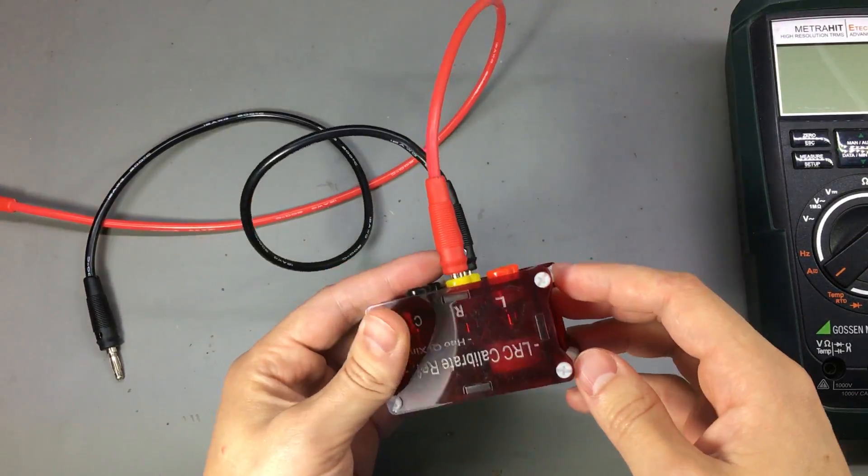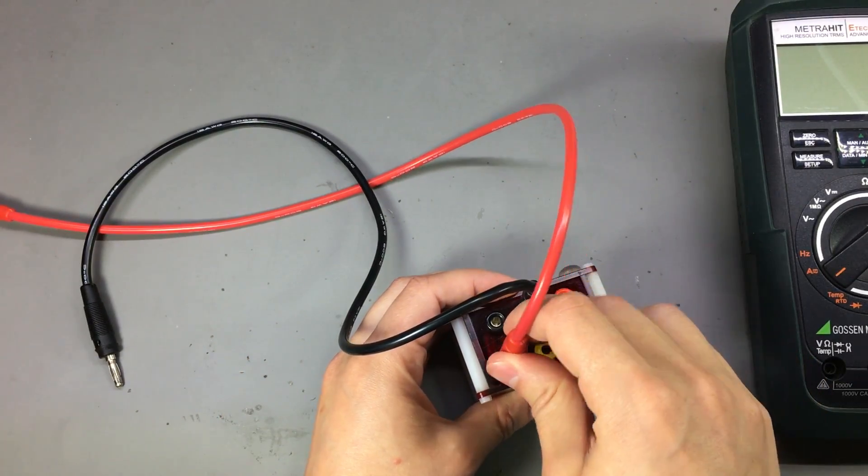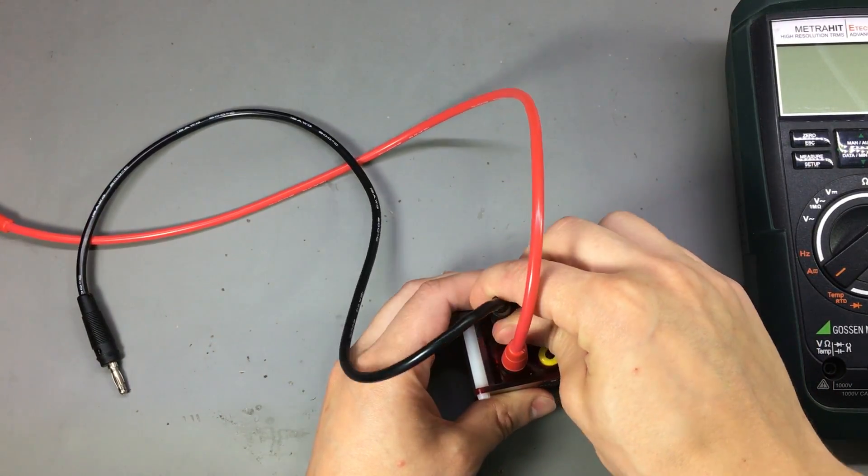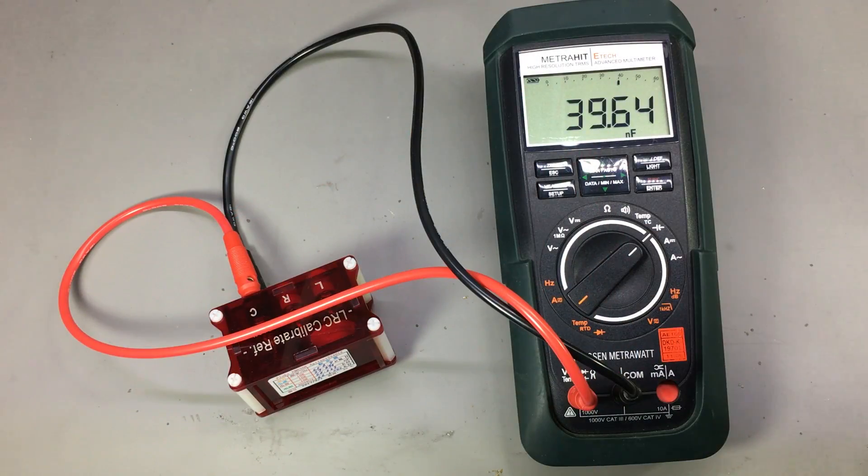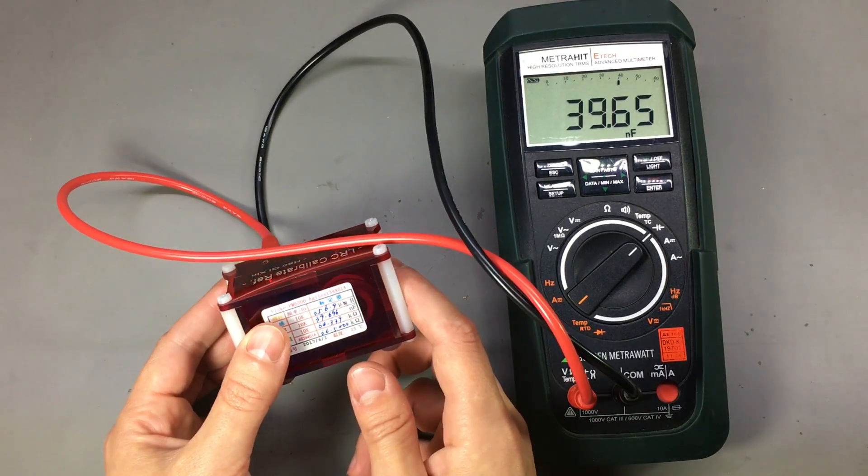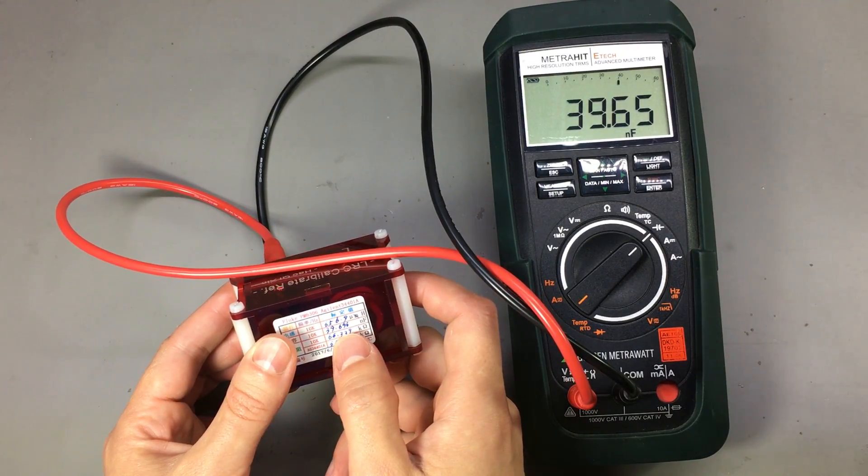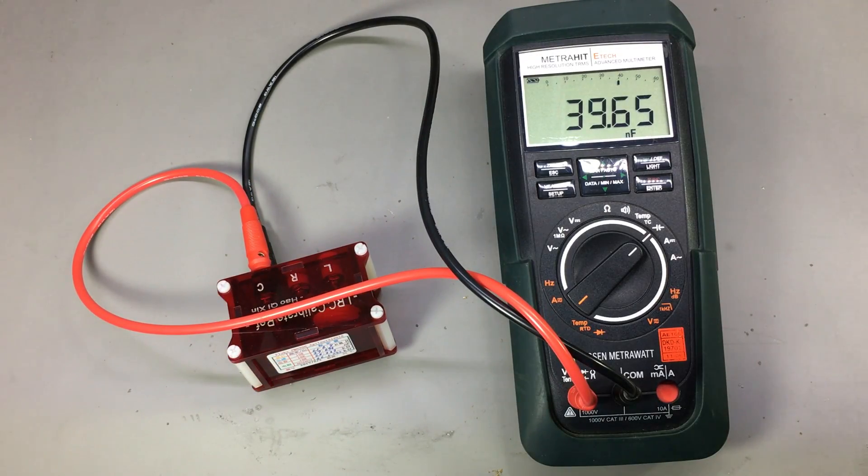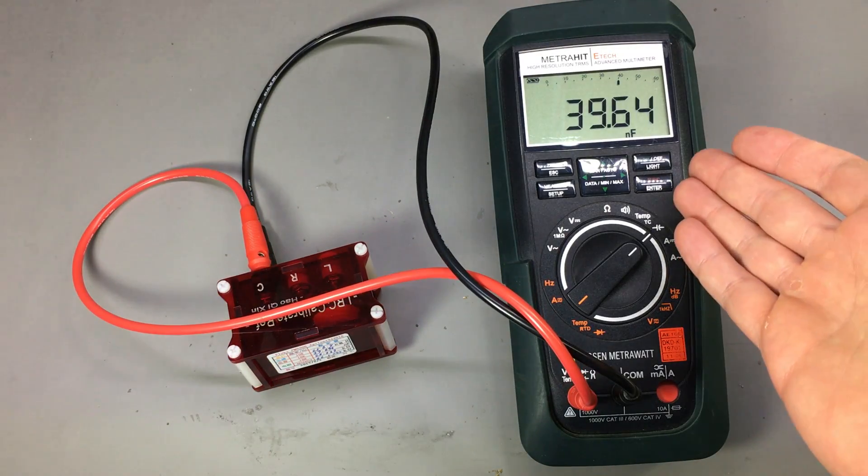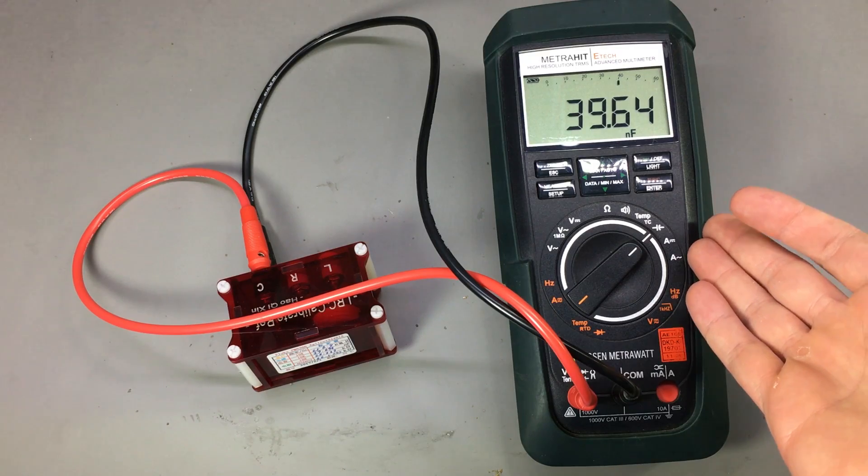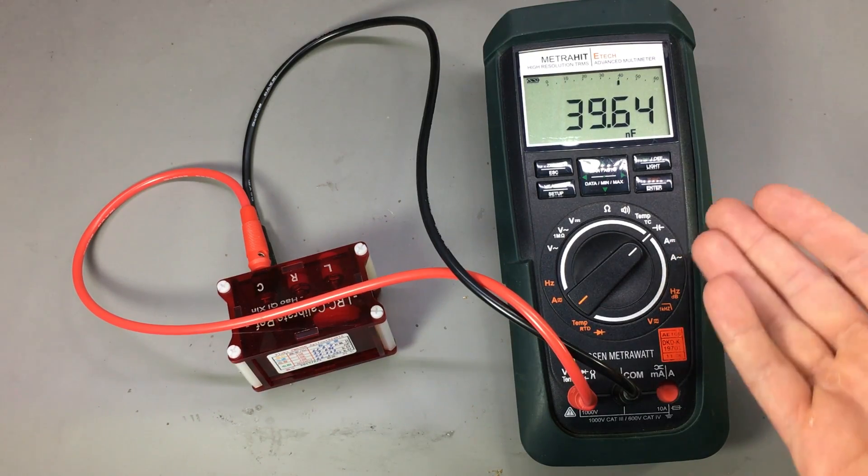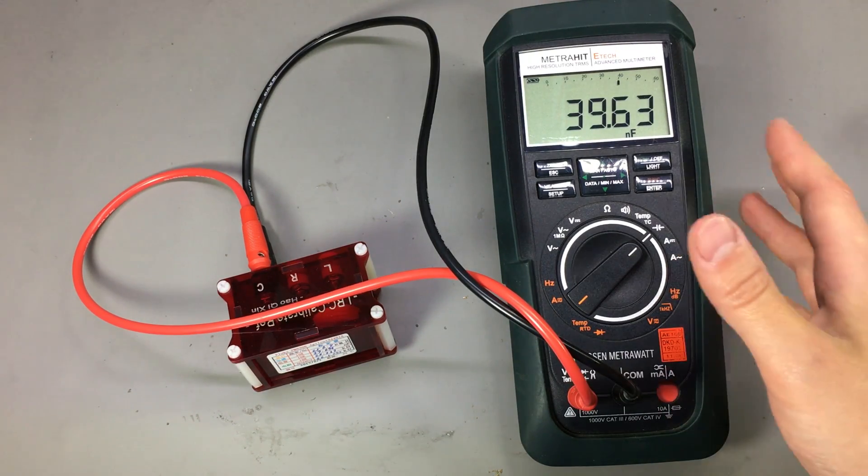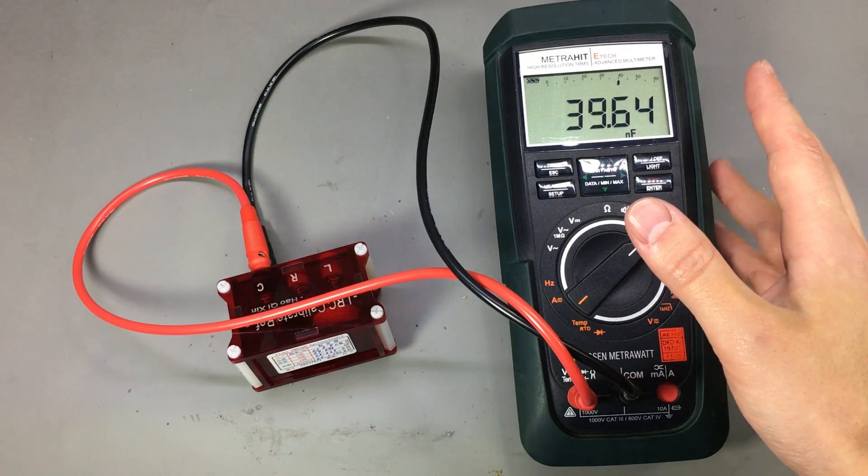So let's also try the capacitor measurement. 39.64nF, and on the box we have 39.696nF. But as mentioned, the resolution is not great on this meter and it could have an error itself. So I'm just checking to see if it's within the same range here.